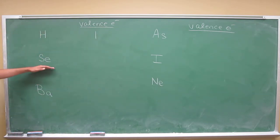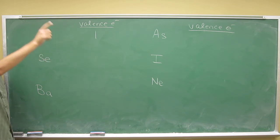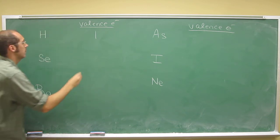Selenium is in group 16, so count. One, two, three, four, five, six. So six valence electrons.